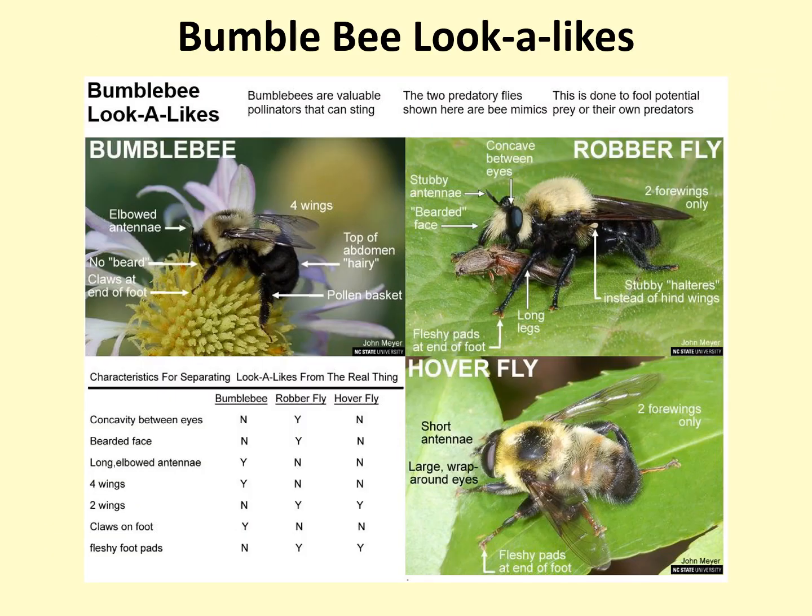One of the first steps in identifying bumblebees is determining what is and what is not a bumblebee. There are many species that can be confused with bumblebees, including some very good mimics. Robberflies and hoverflies are mimics that are often mistaken for bumblebees because of their similar coloring. There are a few key characteristics that you can use to tell a fly from a bumblebee.